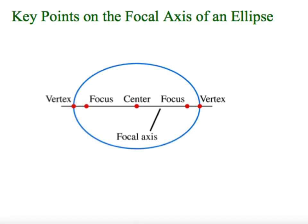Now we're going to fill in some of the attributes that you want to know of an ellipse. We are going to start with an ellipse that has a center at (0, 0). Keep in mind that eventually, much like the circle, we're going to look at what happens if we change the center to a different location. But to start, let's look at what happens when we're at a center of (0, 0), and then we'll adjust from there.